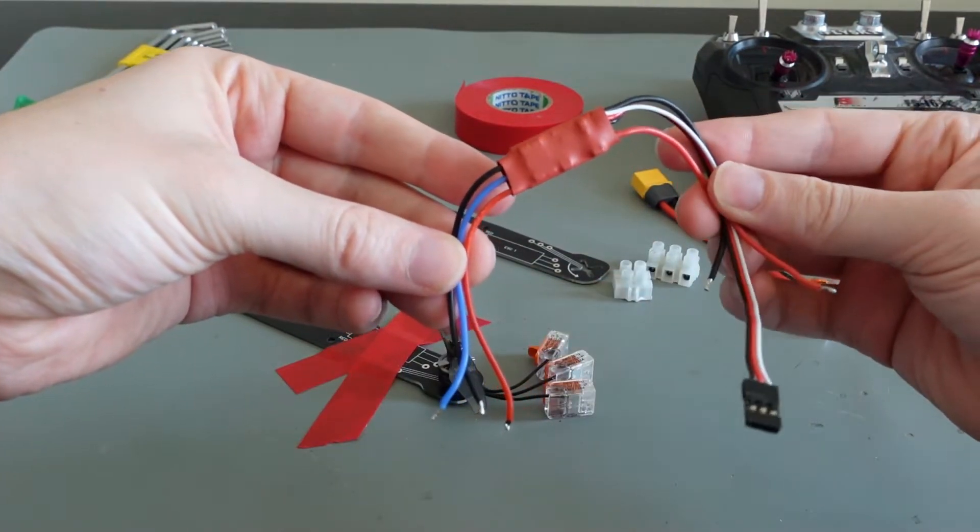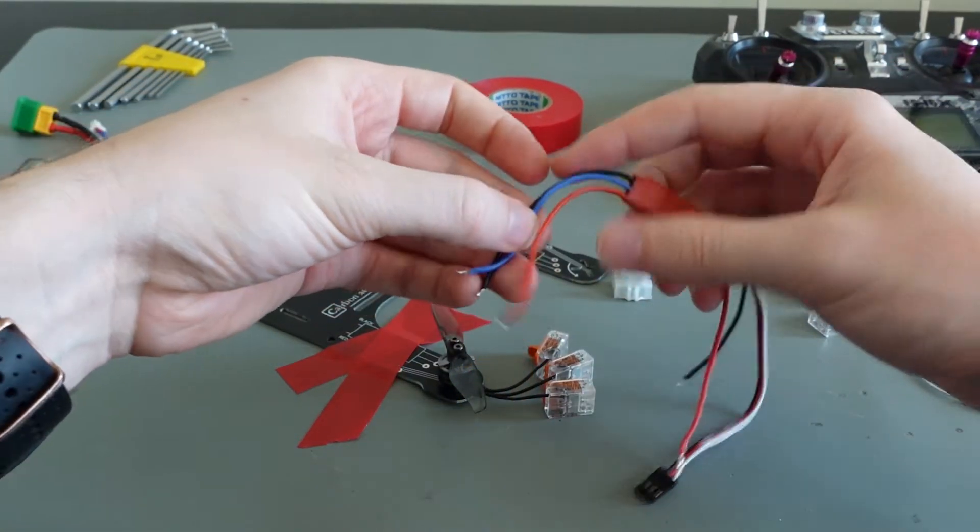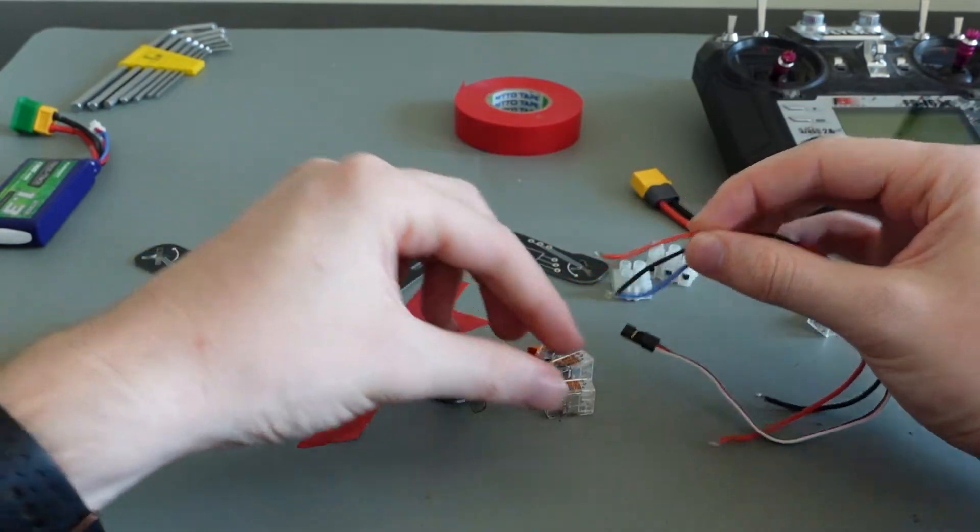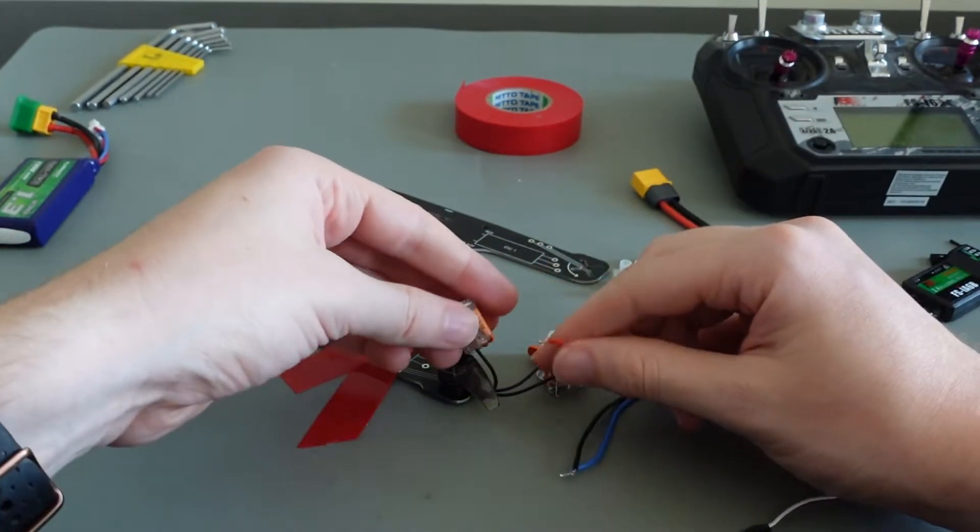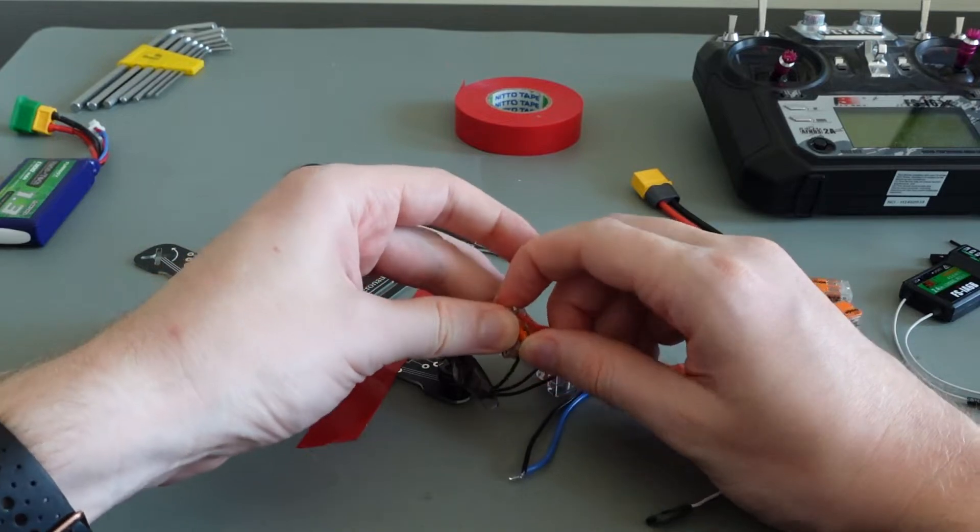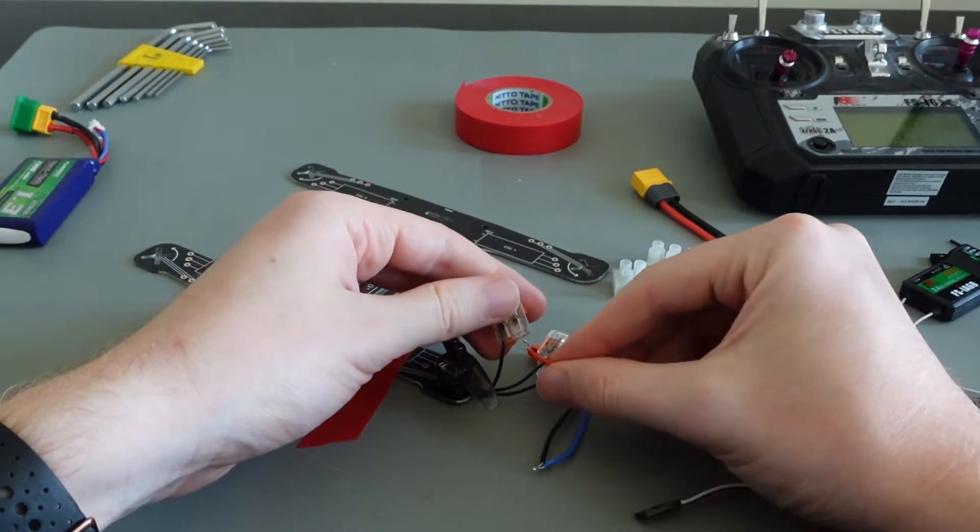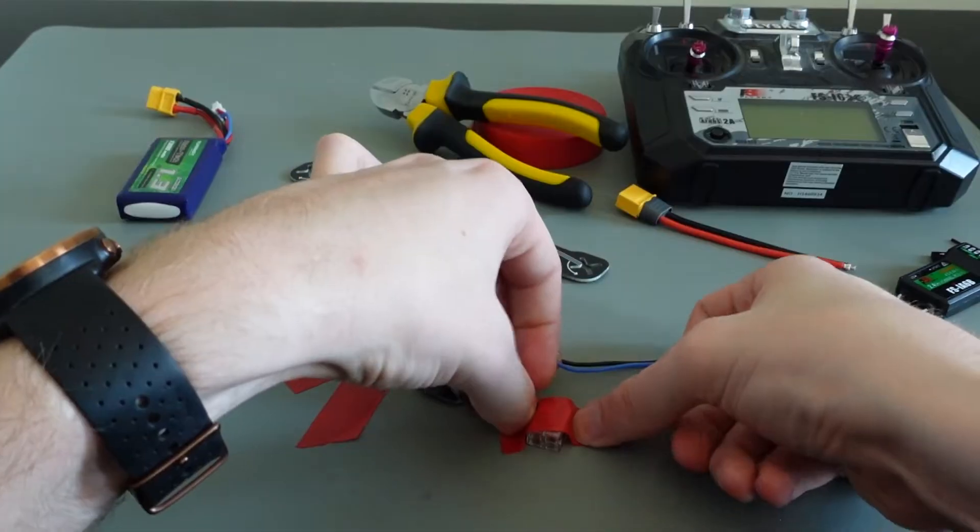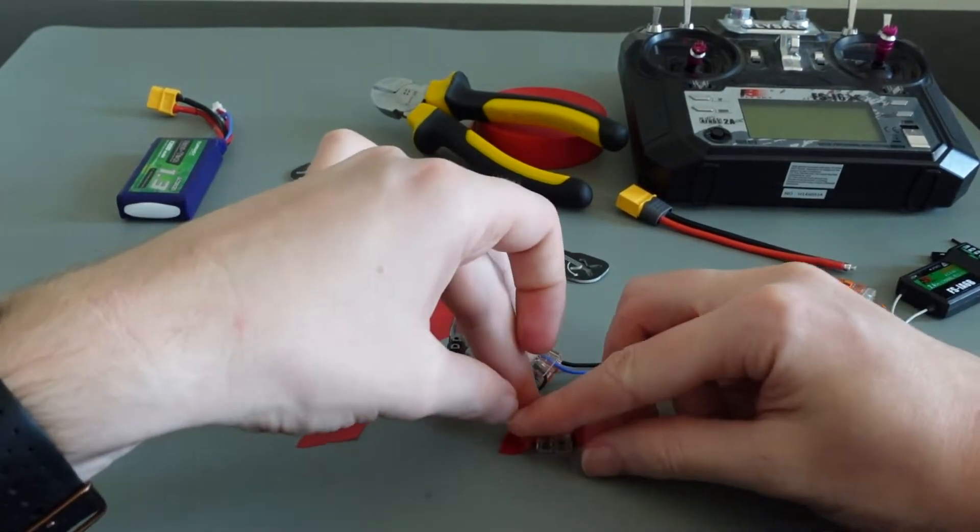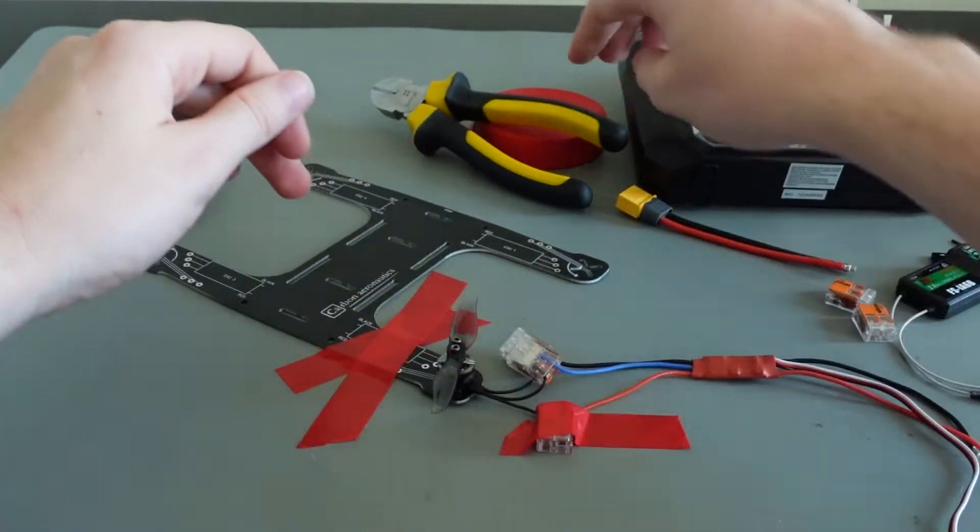First, connect the 3 motor wires to the black, red and blue ESC wires. The order doesn't matter. Switching 2 wires will cause the motor spinning direction to reverse. You can still switch it later. Use some tape to fix the wire connectors as well, such that they will not end up against the propeller.